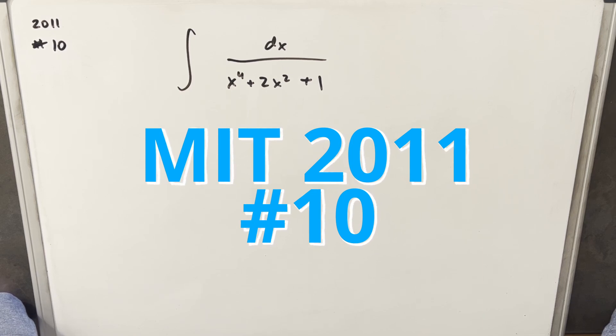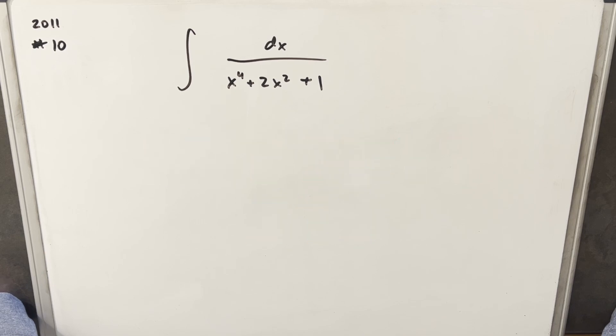We have the integral of dx over x to the 4th plus 2x squared plus 1. I started off trying it a few different ways, and a lot of them were actually pretty difficult. And then I ran into something that works pretty nice.